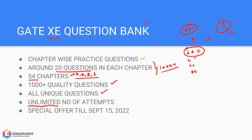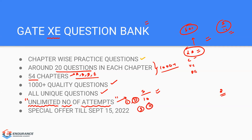You can attempt the question bank any number of times — there is no restriction. For the test series, you can attempt two times, but for the question bank there is no limit. We give this option because, as I said, if you attempt 5 out of 10 questions you're at a good level. You shouldn't stop at one attempt — try the same questions two, three, or four times. By repeatedly attempting the question bank chapters, you become more habituated and learn different ways to solve questions.